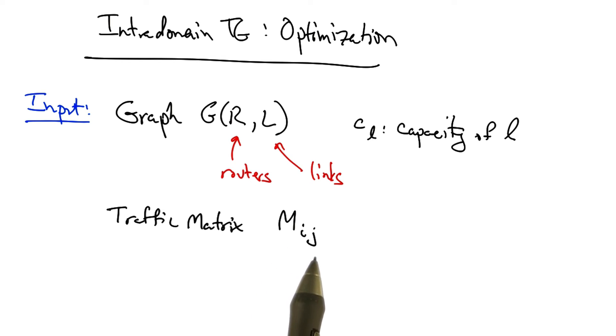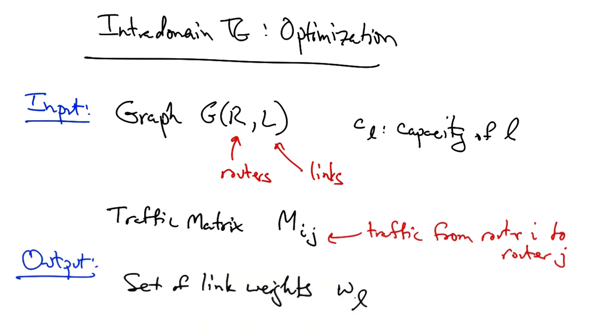Mij represents the traffic load from router i to router j. The output of the optimization problem is a set of link weights, where WL is the weight on any unidirectional link L in the network topology.